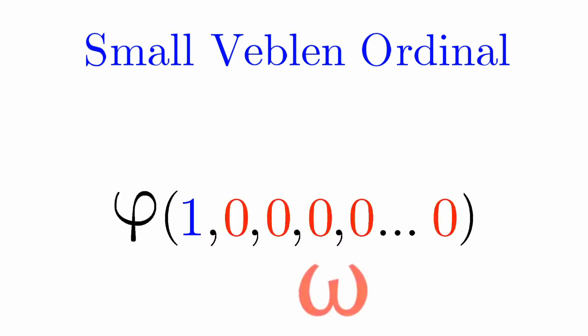The small Veblen ordinal is Phi 1, followed by a mega number of arguments.